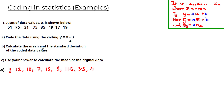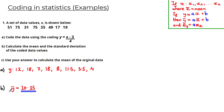The next part asks us to calculate the mean and the standard deviation of the coded data values. There are two ways to approach this. One method is to work out the mean and standard deviation for the original data and then use the results to calculate them for the coded data. Another way is simply to work out the mean and standard deviation from the coded data set we've just calculated, and that's the method we're going to use.